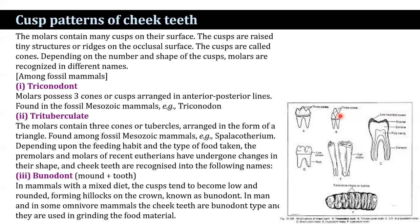Depending upon the feeding habit and type of food taken, the premolars and molars of recent eutherians have undergone changes in shape, and the cheek teeth are recognized as bunodont, lophodont, secodont, selenodont, brachydont, hypsodont, and others. In the bunodont type, found in mammals with a mixed diet, the cusps tend to become low and rounded, forming hills on the crown. In humans and some omnivore mammals, the cheek teeth are bunodont type and are used for grinding food material.